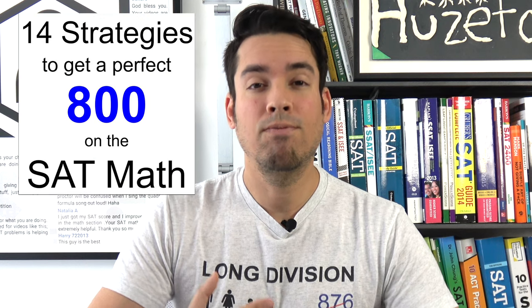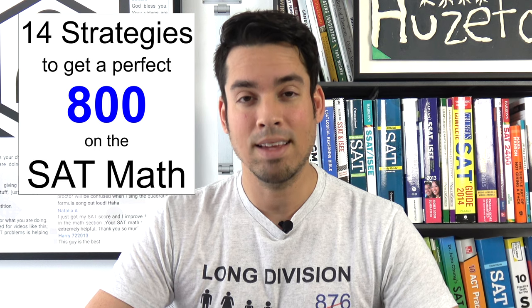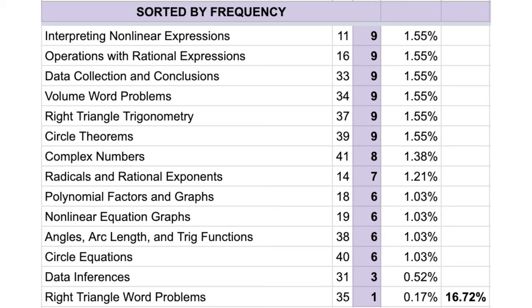This video is part three on how to get a perfect 800 on the SAT Math. If you haven't seen the first two parts you should definitely check them out, as they explain my methodology. This is the final installment covering the final 14 strategies, and the topics in this video constitute about 17% of what's covered on the SAT.